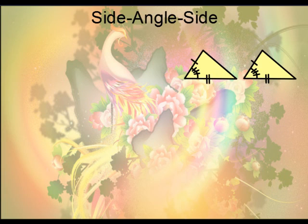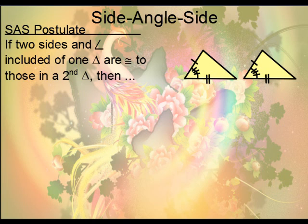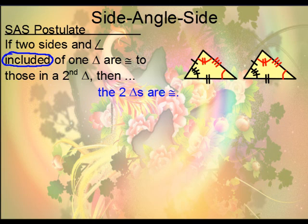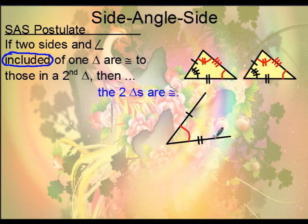The next one is side-angle-side. With side-angle-side, you have two sides, and the third part is an angle, but that angle has to be included, meaning it is between the two sides. If you have that situation, then the triangles are congruent. The two sides surrounding the angle have to be the sides of the angle itself. If we don't have that scenario, that's not enough to say SAS.